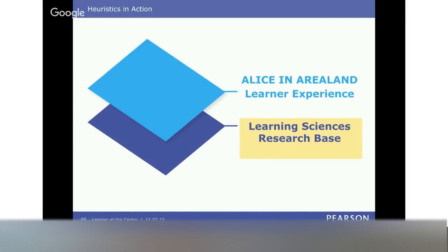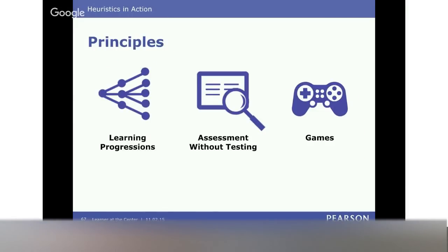A learning progression is documentation showing, based on empirical observations, how learners move from a less sophisticated to a more sophisticated level of understanding. It's not just the table of contents of a textbook or a scope and sequence — it's actually the conceptual jumps that kids make in their understanding about a particular topic. Assessment without testing means we can look at non-traditional forms of data to make inferences about mastery, and games are a vehicle for that.